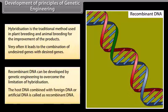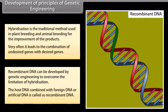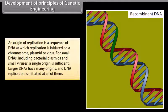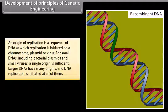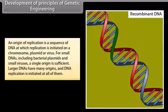The host DNA combined with foreign DNA or artificial DNA is called recombinant DNA. An origin of replication is a sequence of DNA at which replication is initiated on a chromosome, plasmid, or virus. For small DNAs, including bacterial plasmids and small viruses, a single origin is sufficient. Larger DNAs have many origins and DNA replication is initiated at all of them.